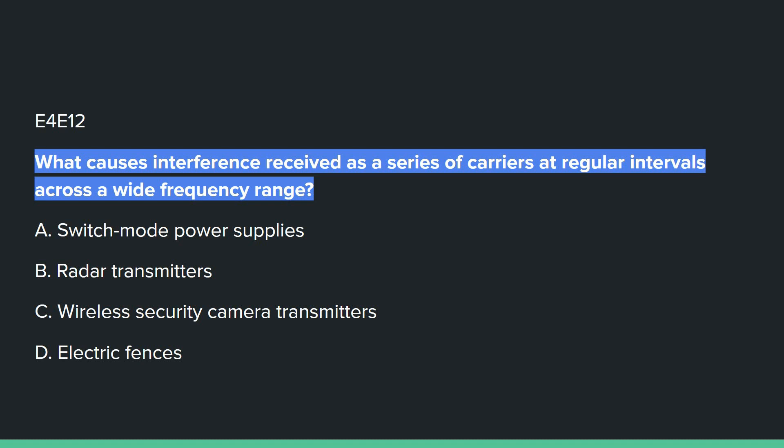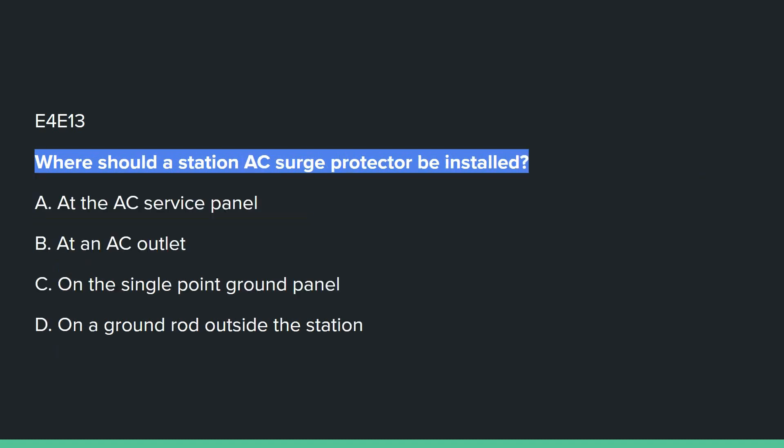E4E12: What causes interference received as a series of carriers at regular intervals across a wide frequency range? Answer A: switch mode power supplies.